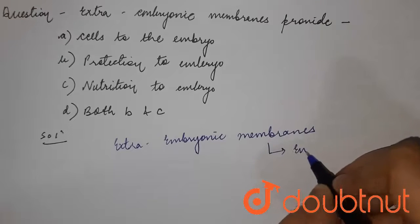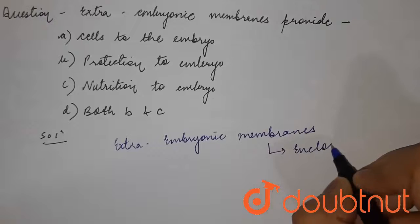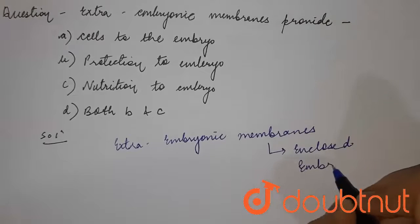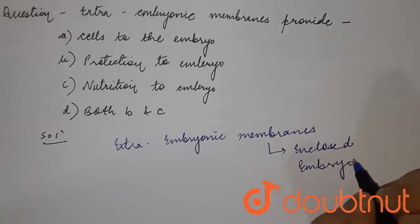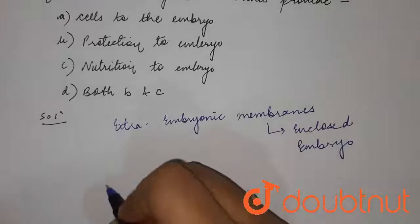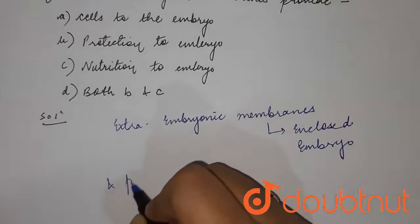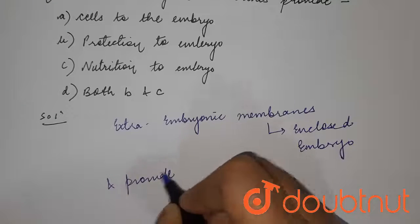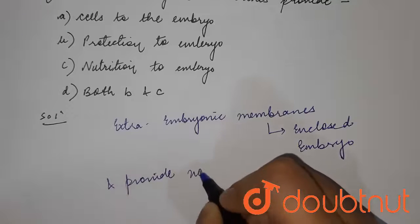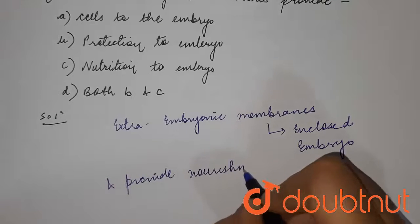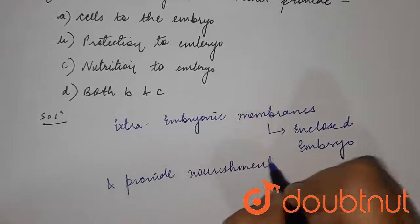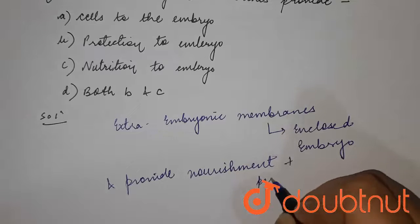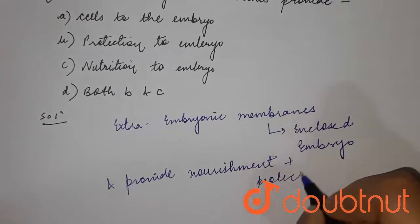So, extra embryonic membranes are the layers which enclose the embryo and provide nourishment, along with protection of the embryo.